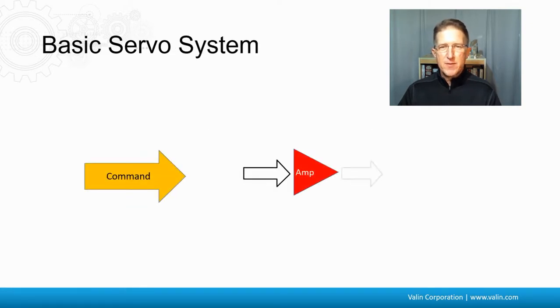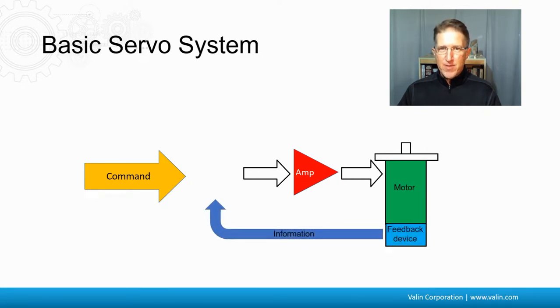So the command comes into the amplifier. It goes to the motor. There's a feedback device on the back of the motor typically. Could be elsewhere, but typically it's on the back of the motor. That provides information back to the summing junction. And there you have it.